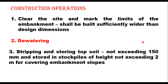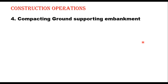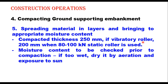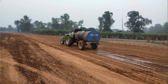After that, compact the ground supporting the embankment. If necessary, the original ground shall be leveled to facilitate placement of the first layer of embankment, scarified, mixed with water and then compacted by rolling to achieve the same density as suggested for the embankment. Then spread the material in layers and bring it to the appropriate moisture content. Compacted thickness should be limited to 250 mm if a vibratory roller is used, otherwise 200 mm. Moisture content should be checked prior to compaction — if soil is too wet it should be dried by aeration or exposure to sun; if too dry, the required moisture should be added so that it is compacted easily at maximum dry density.